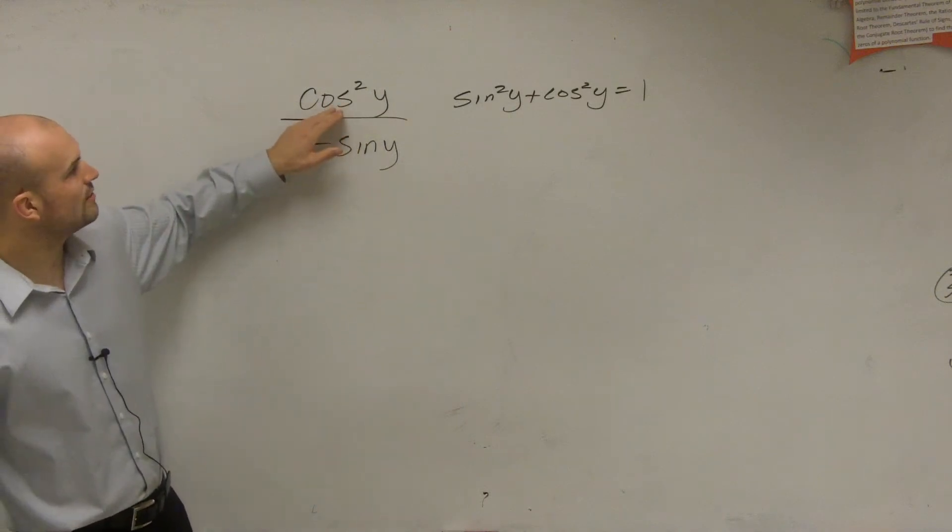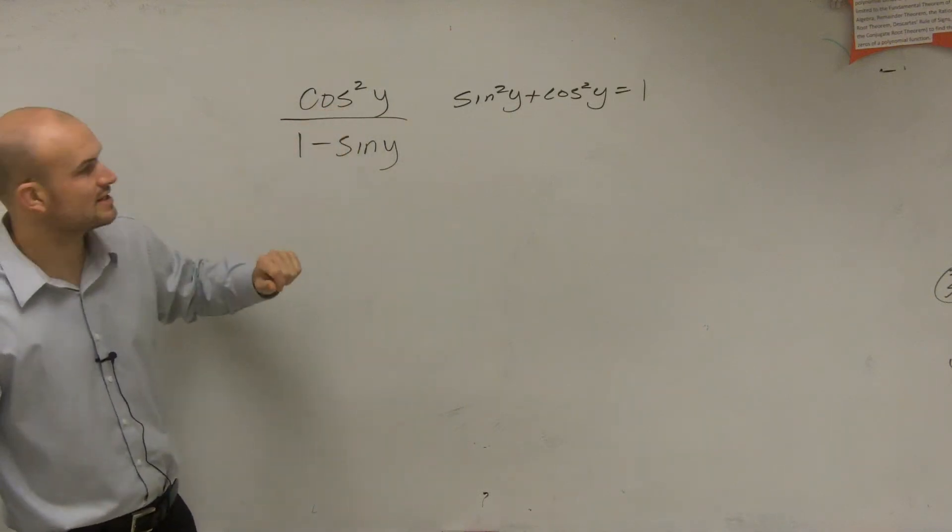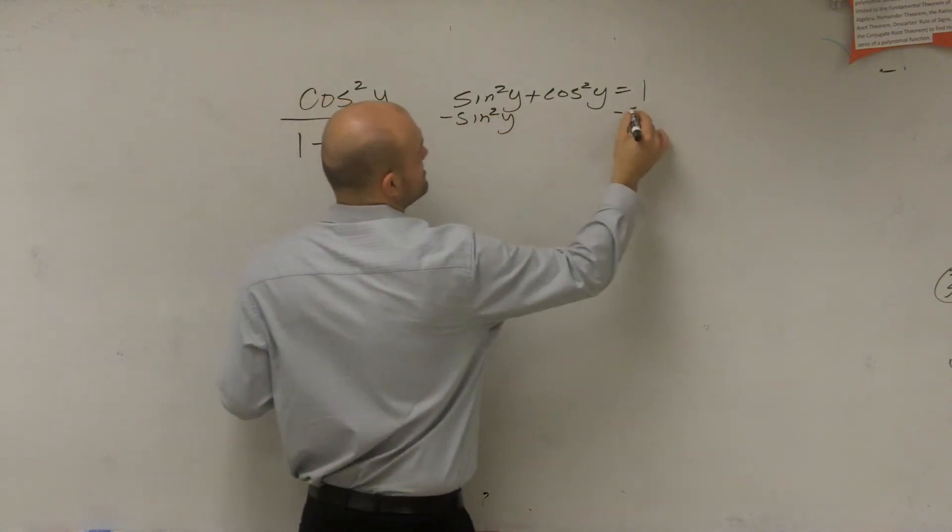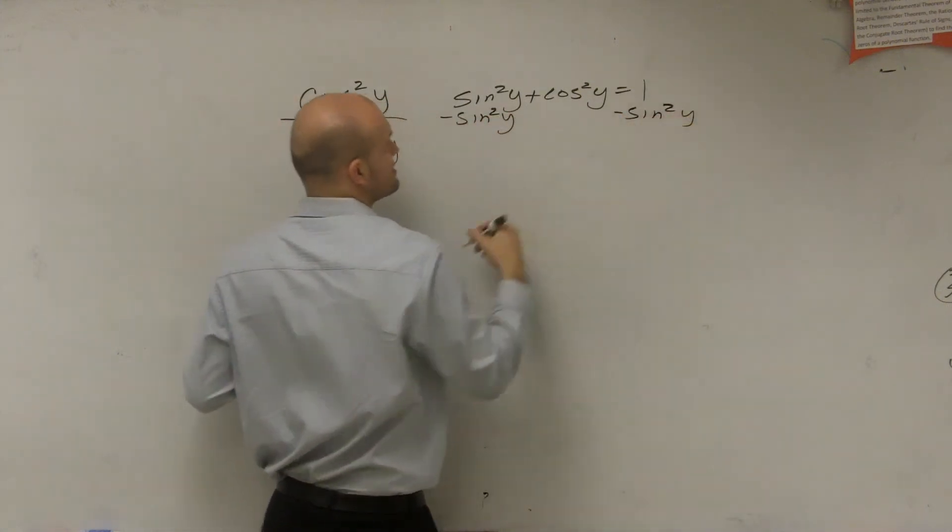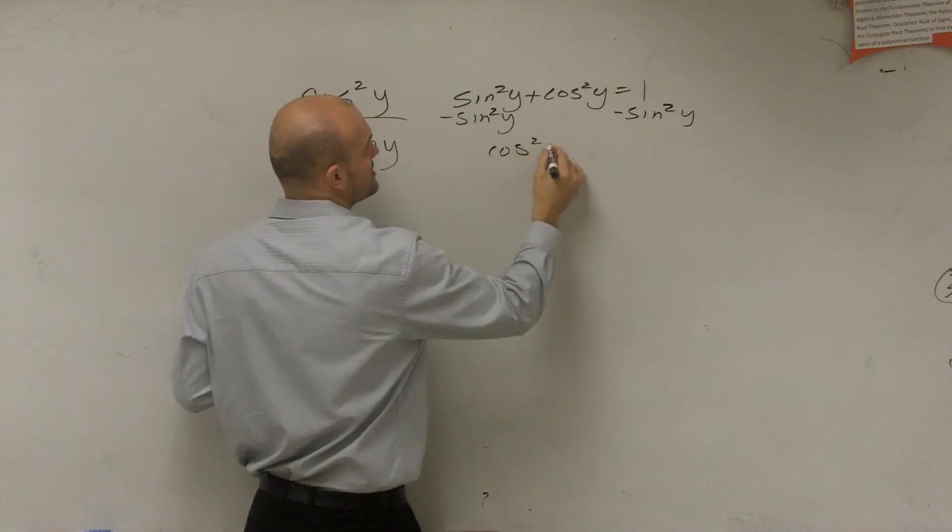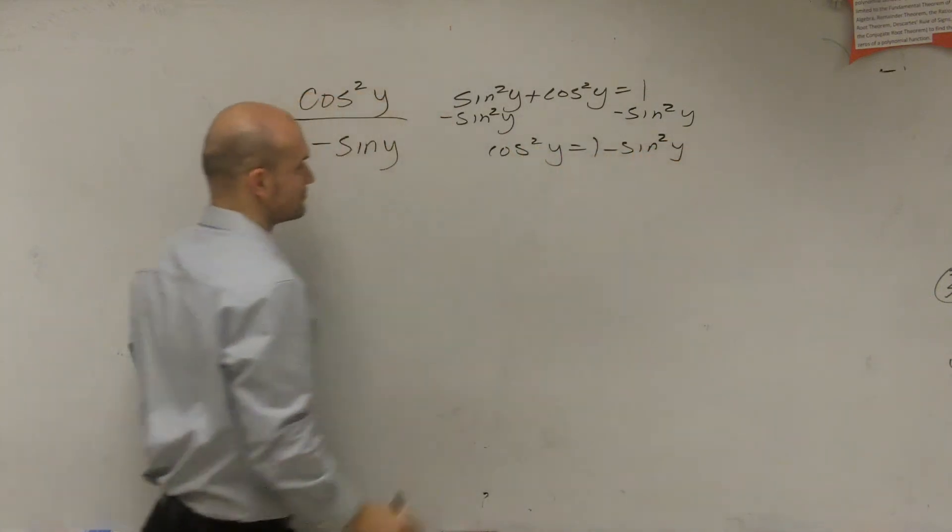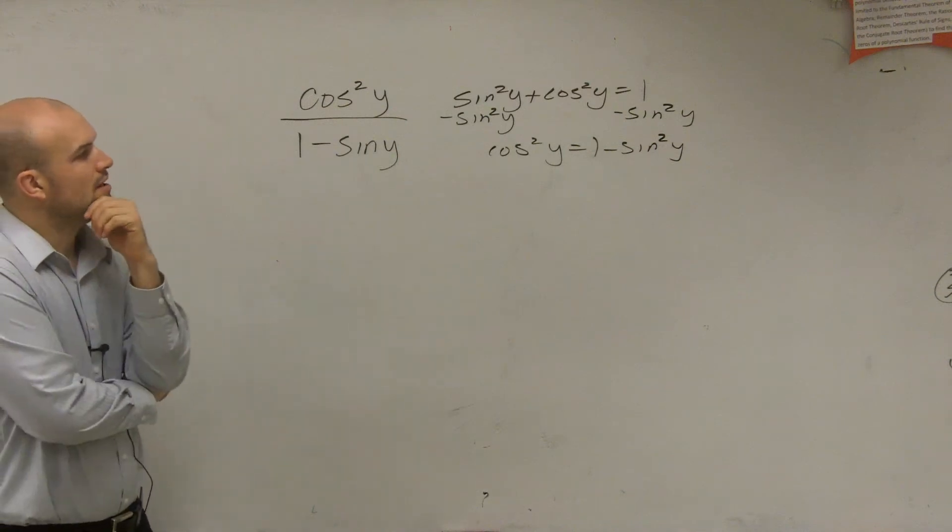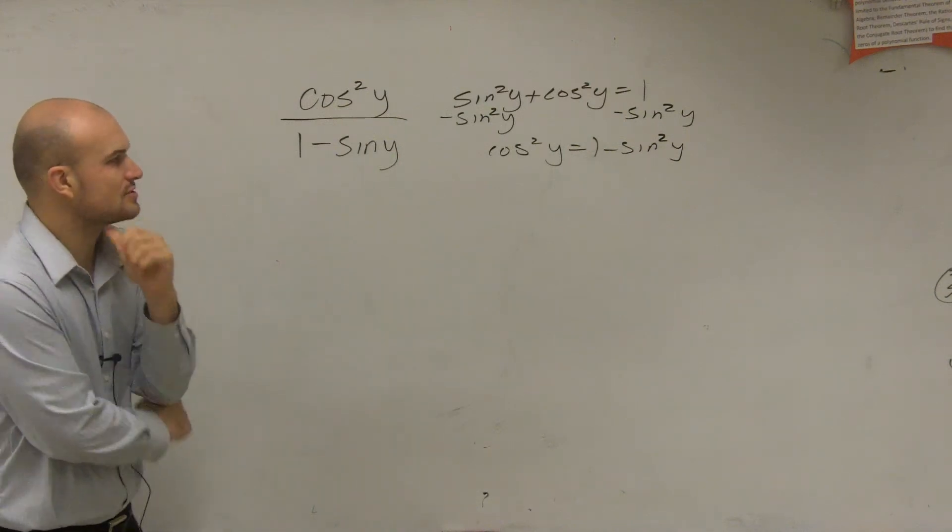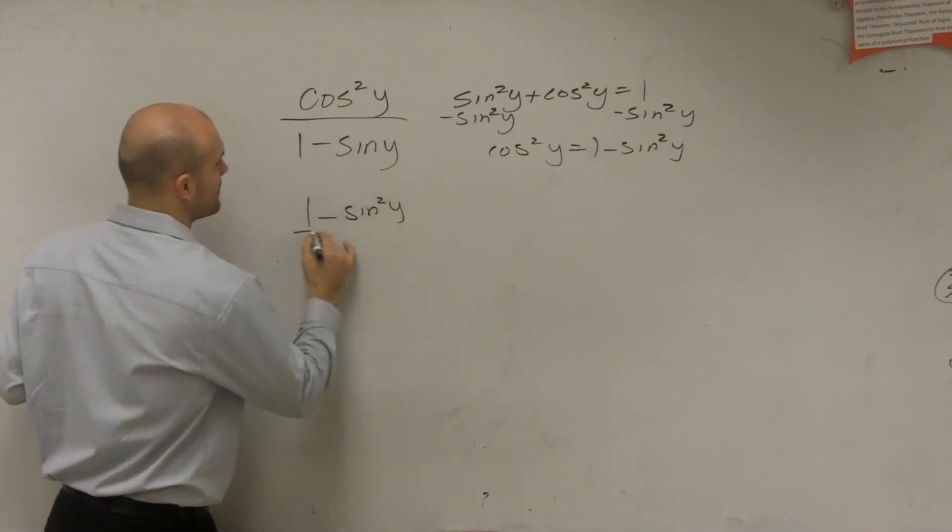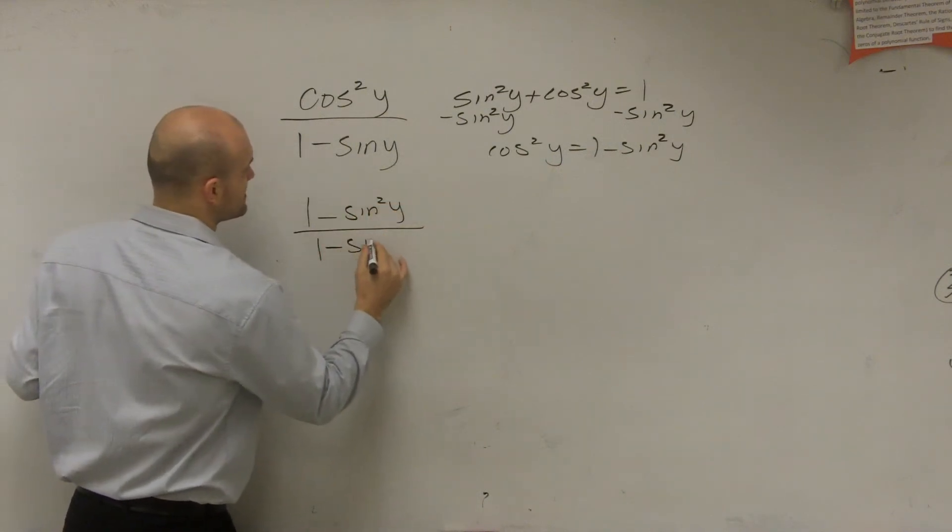So let me go and see, how can I maybe transform what cosine squared equals? Well, again, remember, we can solve for cosine squared by subtracting the sine squared on both sides. So I have cosine squared of y equals 1 minus sine squared of y. So now I rewrite this as 1 minus sine squared of y divided by 1 minus sine of y.